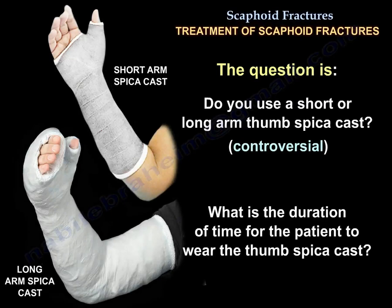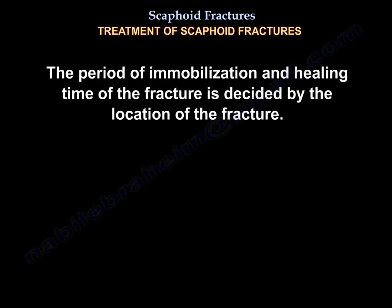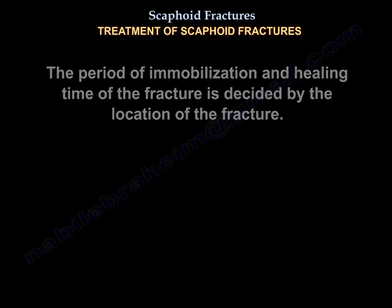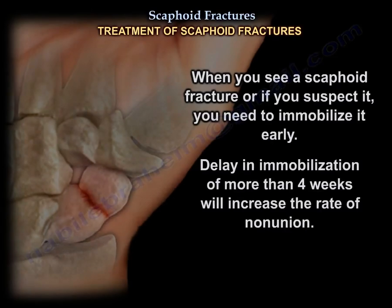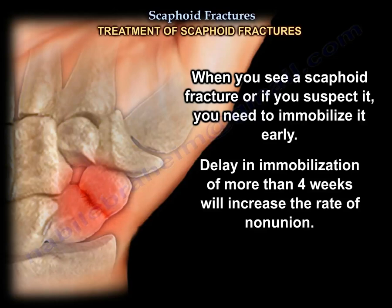The question is: do you use a short or long arm thumb spica cast, and what is the duration? The period of immobilization and healing time is decided by the location of the fracture. For the distal pole, healing occurs in about 8 weeks. The middle third waist takes about 8–12 weeks, and the proximal third takes 5–6 months. Proximal fractures are very slow to heal in a cast. When you see or suspect a scaphoid fracture, immobilize it early — delay of more than 4 weeks will increase the rate of nonunion.